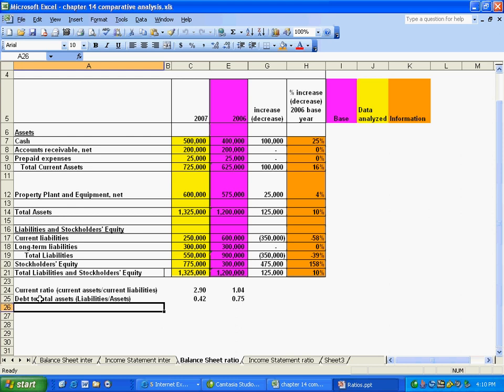The second ratio that we've just demonstrated here is debt to total assets. Basically, we're just dividing our liabilities over our assets. And you can see that our ratio went from 0.42 in 2007 down from 0.75. You think of debt. Do we want to have more debt or do we want to have less debt? Well, I would bet that most of you are saying that we'd rather have less debt. So that's the correct answer. All things being equal, a lower debt to total assets ratio is better than a high debt to total assets ratio.